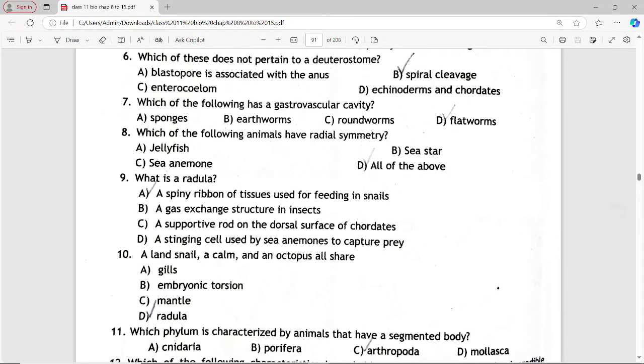Next MCQ is: which of these does not pertain to deuterostomes? Options are blastopore is associated with anus, spiral cleavage, enterocoelomate, echinoderms and chordates. Answer is option B, spiral cleavage.